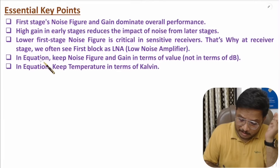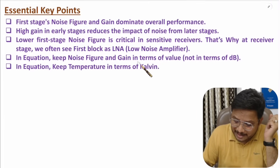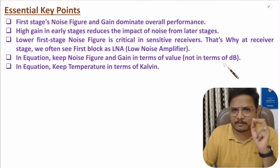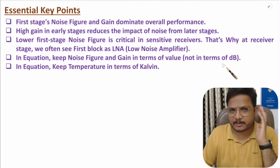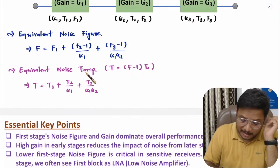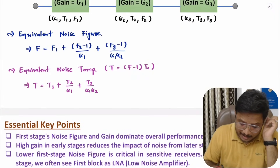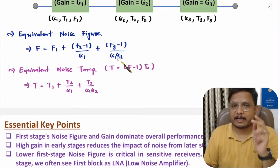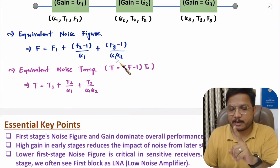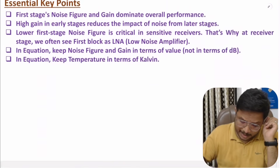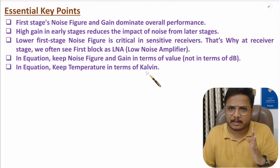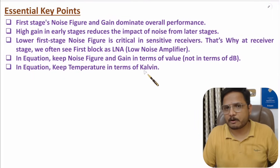An important note: in the equation, you need to keep noise figure and gain in terms of numerical value, not in dB. I have seen students making this mistake in the majority of cases. So whenever you apply this equation, convert F1, F2, F3 and G1, G2, G3 into numerical values — they should not be in dB. Also, when you apply the equation, temperature should be in Kelvin. These are the essential key points to keep in mind.